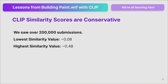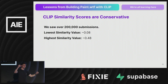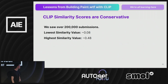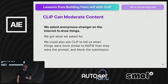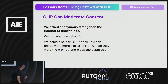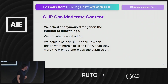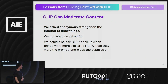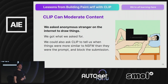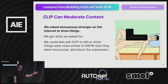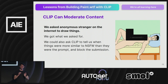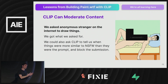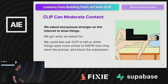CLIP similarities are very conservative. Over 20,000 submissions, the lowest similarity value was about 8% and the highest was 48%. That's why I had that function at the top of render that scaled the lowest value to zero and the highest to 100. CLIP can also moderate content — we learned this because we asked anonymous strangers on the internet to draw things. We could ask CLIP to tell us when things were NSFW, blocking submissions where the image was more similar to something not safe for work than to the prompt. Worked pretty well — not hot dog.